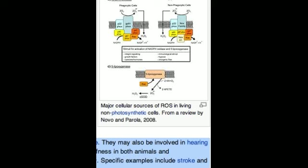Redox signaling is also implicated in mediation of apoptosis or programmed cell death and ischemic injury. Specific examples include stroke and heart attack.